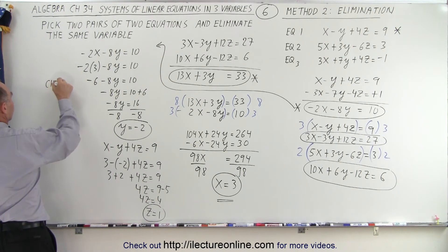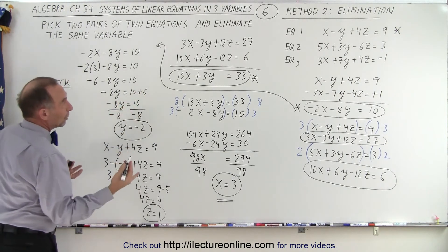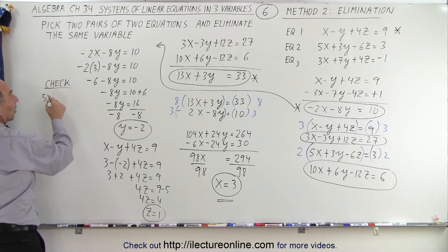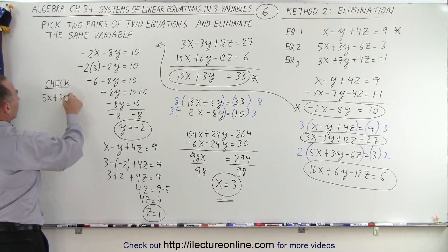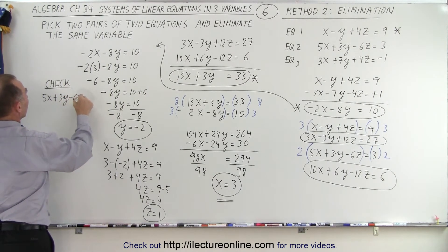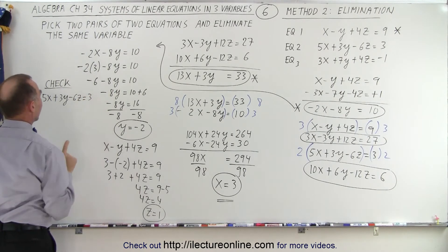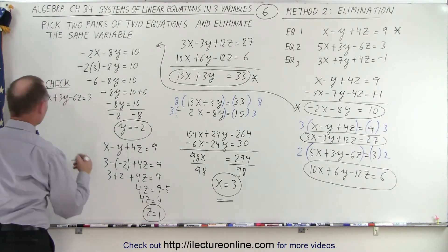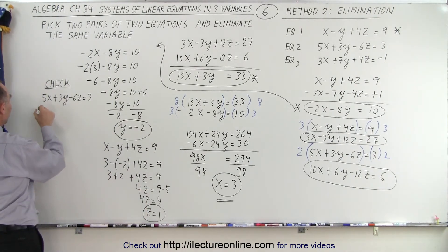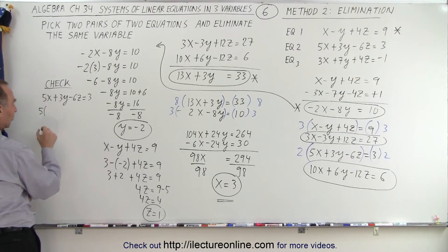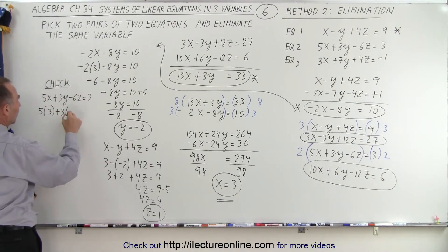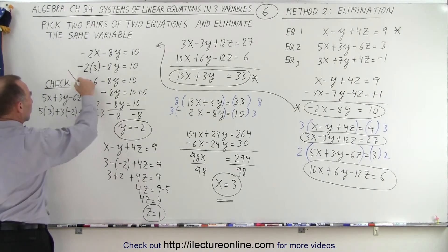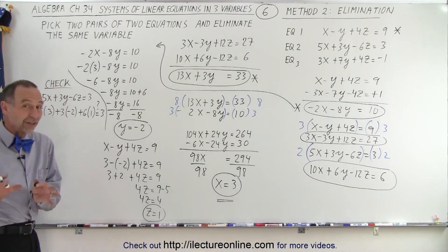So we do a quick check. We grab the middle equation: 5x plus 3y minus 6z is equal to 3. We plug in x equals 3, y equals negative 2, z equals 1 to see if that is a valid equation. So 5 times 3, plus 3 times negative 2, plus 6 times 1 equals 3 — that's a question mark, because that's what we're checking.